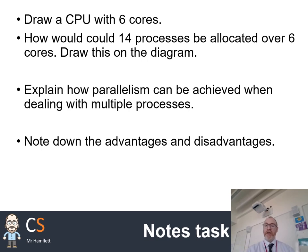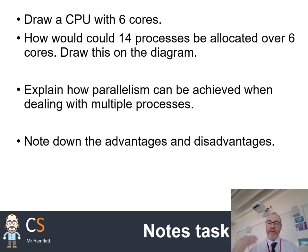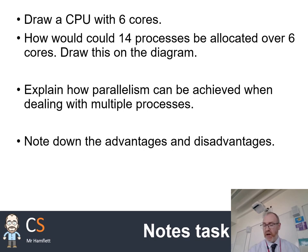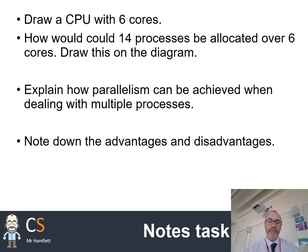Finally, it's time to make notes on multitasking and multiple cores. Draw a CPU with six or eight cores and consider how you could allocate 14 processes across those cores — this illustrates the idea that scheduling is used on a single core, but with more than one core, processes can be allocated fairly using something called a load balancer. Explain how parallelism can be achieved when dealing with multiple processes — breaking a process into independent chunks which run in parallel, or fairly allocating many requests across cores on a server. Note down the advantages and disadvantages of parallel processing as explained.